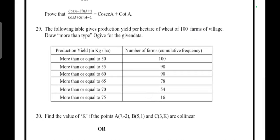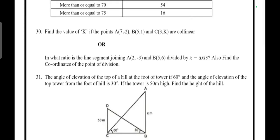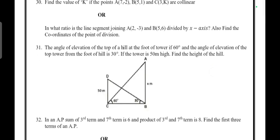Draw more than type ogive from the given data. Then find the value of k if points A(7, -2), B(5, 1), and C(3, k) are collinear. OR in what ratio is the line segment joining A(2, -3) and B(5, 6) divided by x-axis? Also find the coordinate of the point of division.